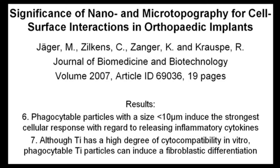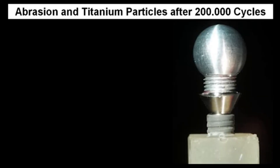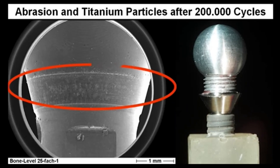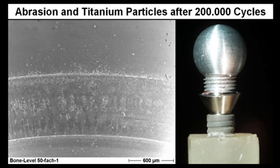So we will get bone loss. We loaded 200,000 cycles and put the sample into an SEM analysis. Coming closer and having a closer look, we see there are really many abrasions inside of this conical interface.